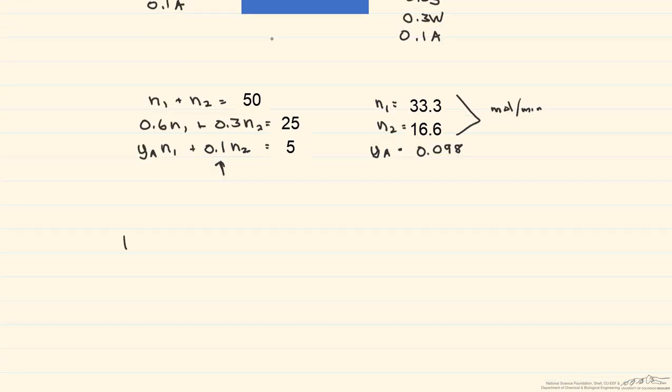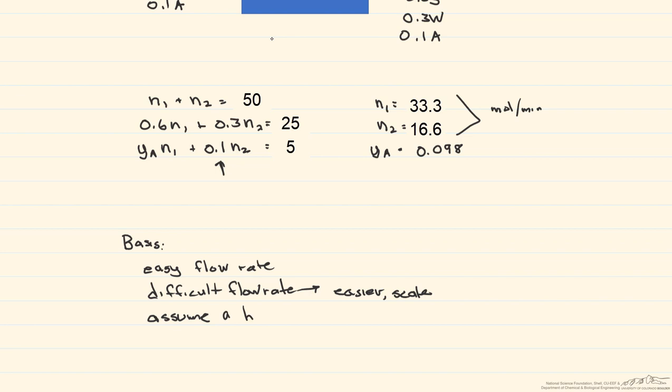So to summarize how to use a basis, if you're given an easy flow rate, go ahead and use it. If instead you're given a difficult flow rate, then what you can do is change it into something easier and then scale up or even down. And finally, you can assume a basis, but this is only if you're looking for some kind of ratio or some kind of composition.